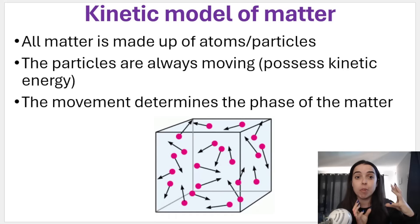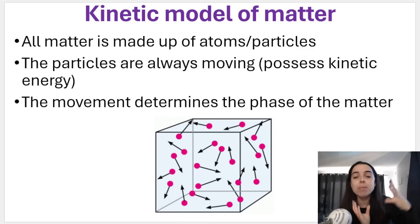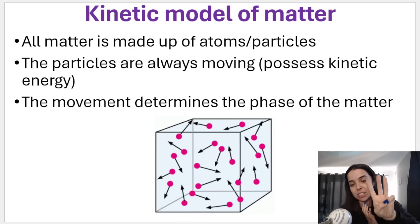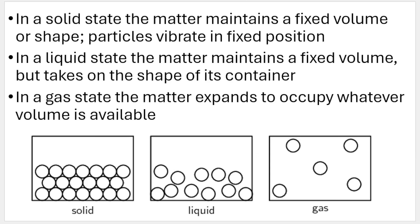The kinetic molecular theory says that all matter is made up of particles. These particles are moving — they possess kinetic energy, which is how they move — and the movement determines the phase of matter. We covered three phases of matter: solid, liquid, and gas. In a solid state, the matter maintains a fixed volume; particles move very slowly and they vibrate in fixed positions.